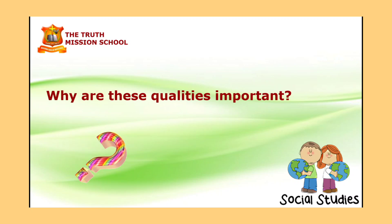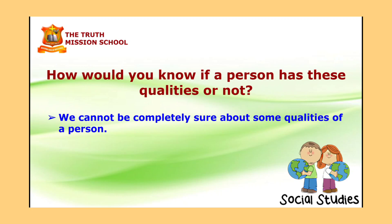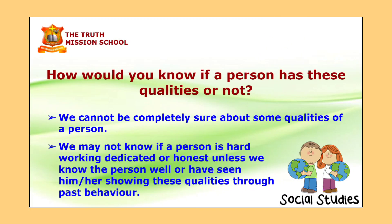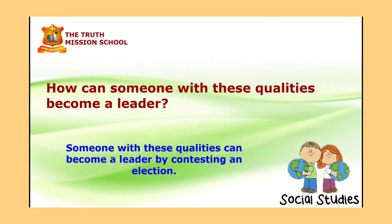How would you know if a person has these qualities or not? We cannot be completely sure about some qualities of a person, because we may not know if a person is hardworking, dedicated, or honest unless we know them well or have seen them showing these qualities through past behaviour. Someone with these qualities can become a leader by contesting an election, and through an election we can find a good quality leader.